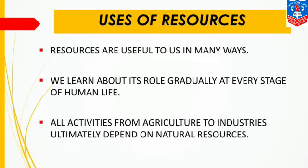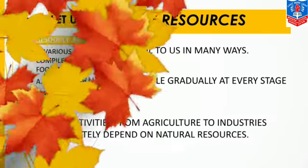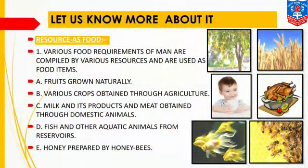For agriculture we need land, water, and seeds. Similarly, in industries we need raw material which we get from nature itself. The first use is resource as food — some resources are used as food.